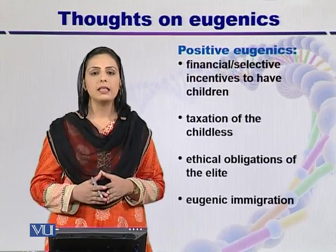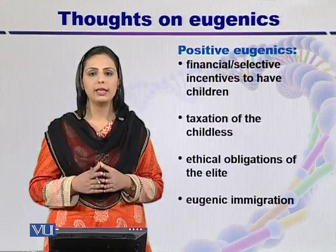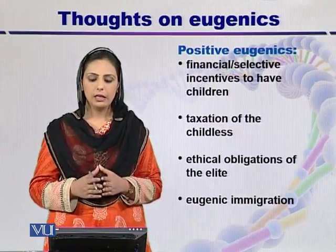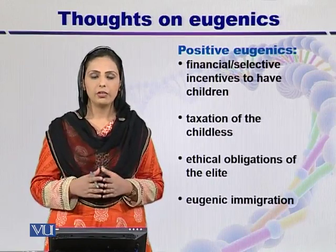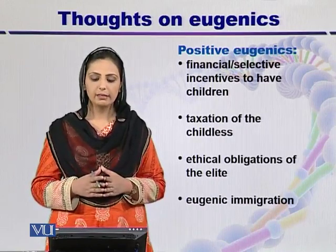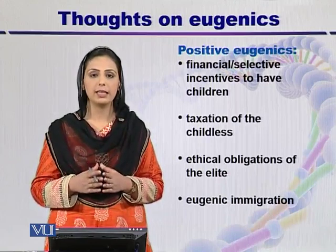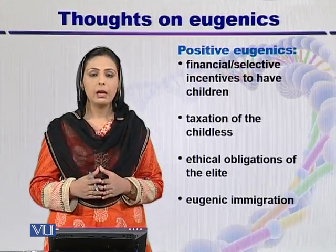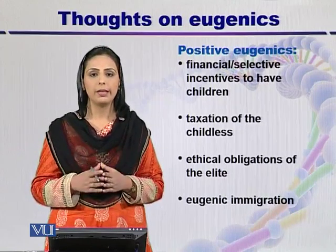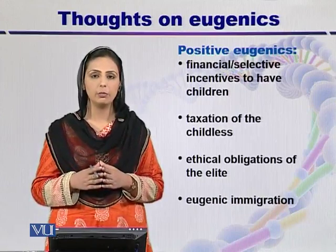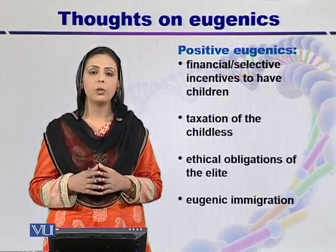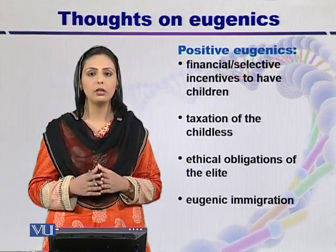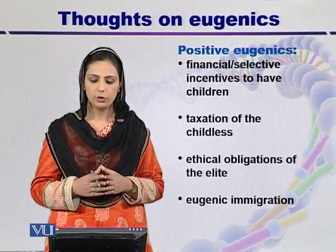The second subtype of classical eugenics is positive eugenics — that is, how we can increase the reproductive rate. In different countries, for example in Canada, there are financial selective incentives to have children, with separate incentives for each child. For childless parents, taxation is a key issue. Ethical obligations of the elite and eugenic immigration are also important components of positive eugenics.